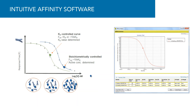Gyrolab evaluator software allows for the selection of data sets, displays charts, and experimental information. Using a higher concentration of free interactant, the curve is stoichiometrically controlled — the right curve — and the active concentration of the fixed interactant is obtained. The left curve is a titration curve, and the active concentration is determined at the equimolar concentration of the variable interactant needed to titrate the fixed interactant binding sites.